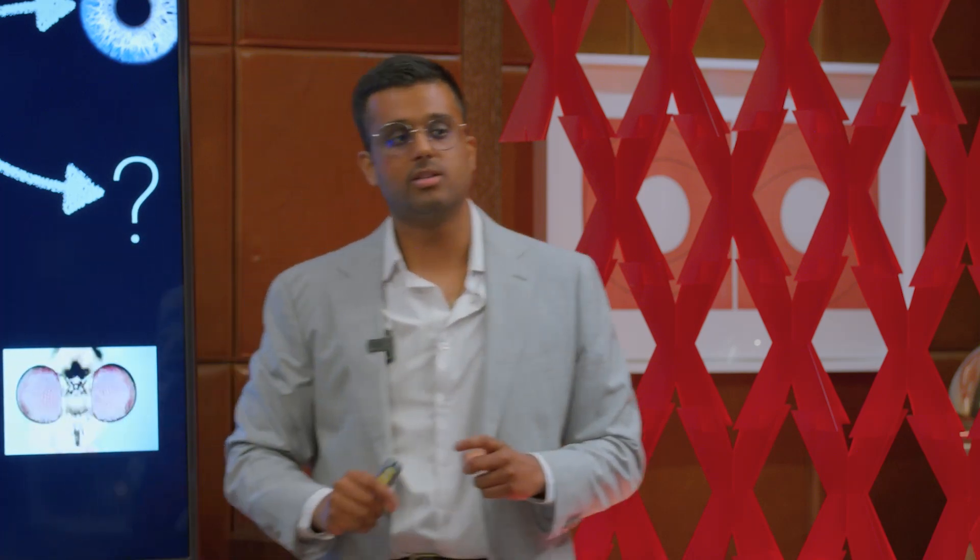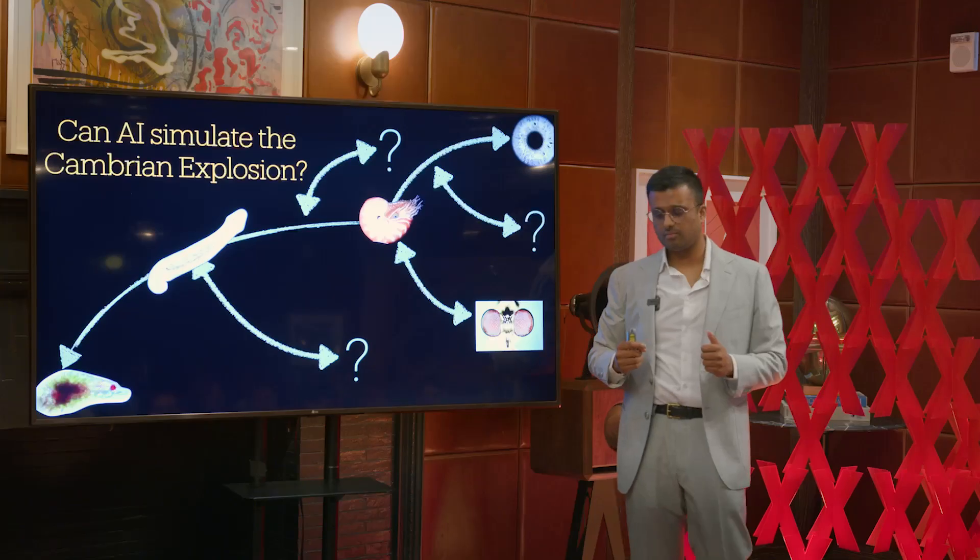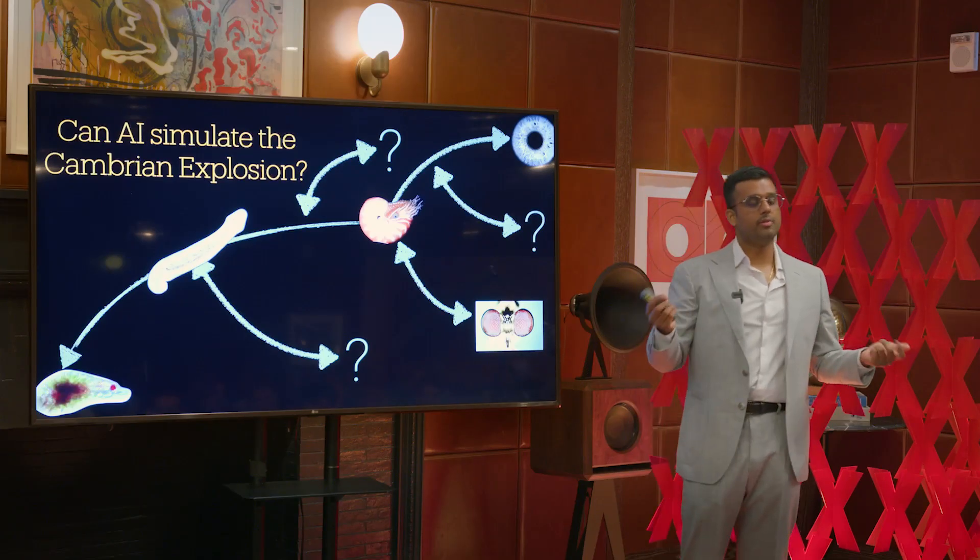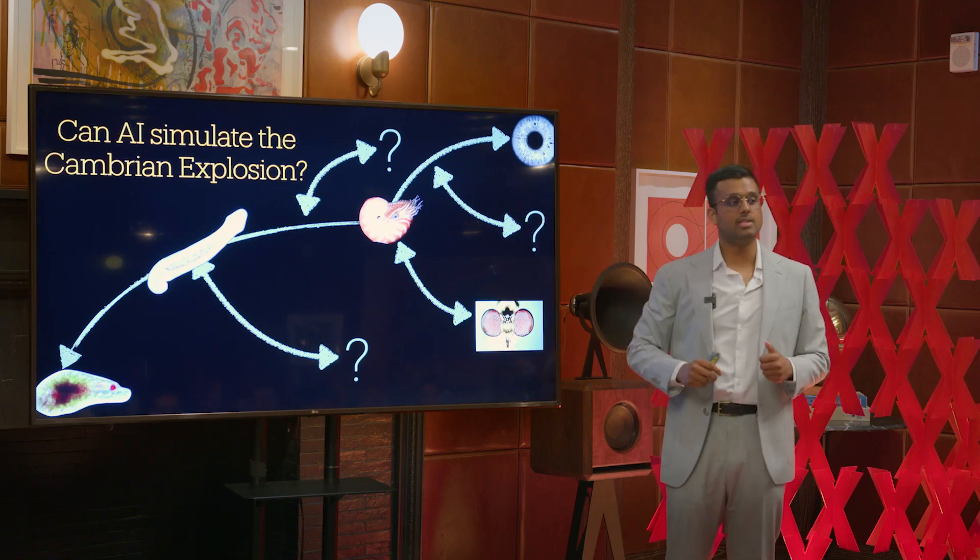These may be extinct animals that have gone extinct, and it will help us realize how we can change how we design artificial intelligence. To create this artificial explosion, we need to first create the building blocks of eyes and intelligence.